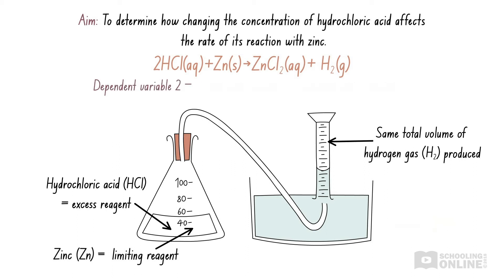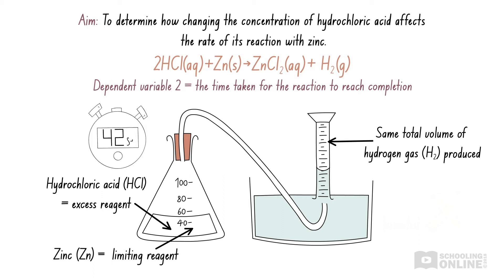Let's look at Carl's other dependent variable: the time taken for the reaction to reach completion. The reaction produces hydrogen gas, so the reaction stops when no more bubbles are produced. Since zinc is the limiting reagent, all of the zinc will be consumed at completion, and Carl could measure how long this takes using a stopwatch. If the reaction rate increases, the reaction should reach completion faster, so the time taken will be smaller. Therefore, this is a valid measure of reaction rate. We should carefully select the variables we measure so that we obtain valid results.